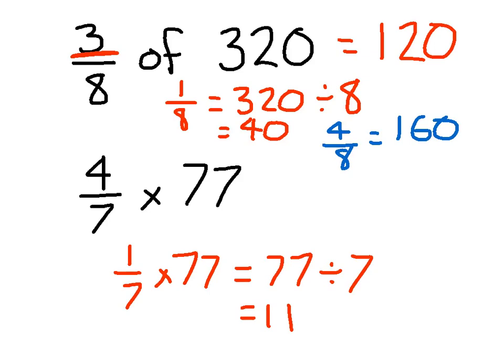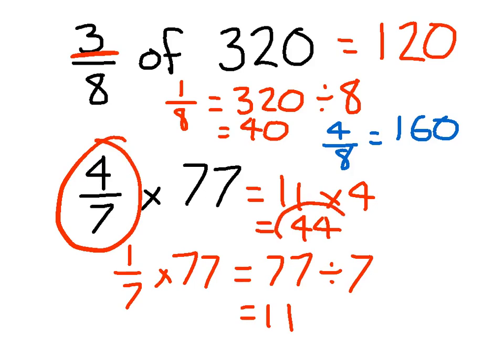So 4/7 of 77 equals 11 times 4, which equals 44. So 4/7 is 44.